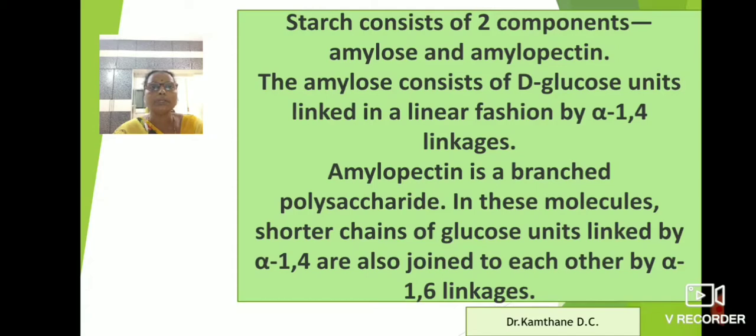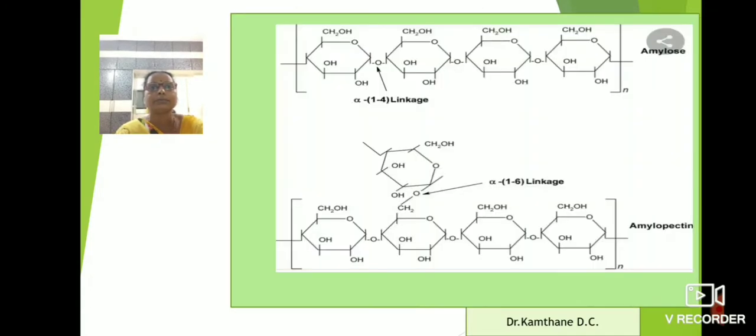Amylopectin is a branched polysaccharide. In these molecules, short chains of glucose units are linked by alpha-1,4 linkages and are joined to each other by alpha-1,6 linkages. These are the amylose and amylopectin components of the starch.